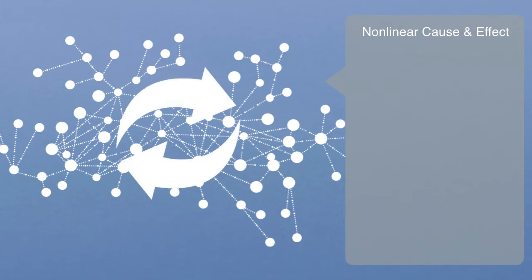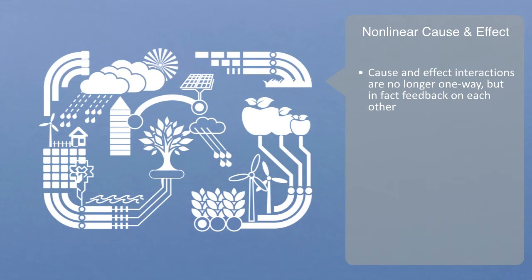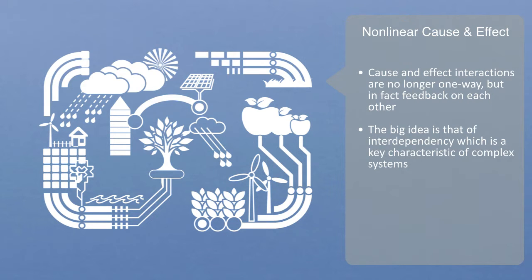But in complex systems where the components are highly interconnected and interdependent, cause and effect interactions are no longer one way, but in fact feed back on each other. In these highly interconnected systems, a change in one component will not only affect another or possibly several others, but how it affects the other components will in turn feed back to affect its future state. The big idea here is that of interdependency, which is a key characteristic of complex systems.